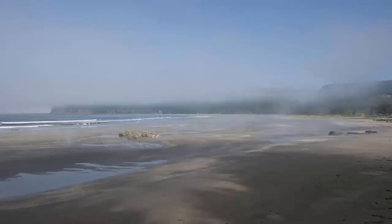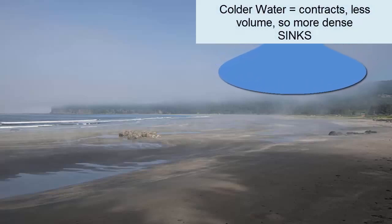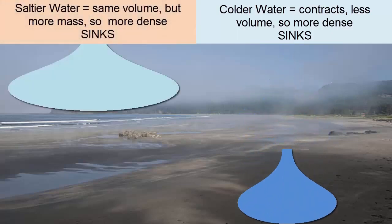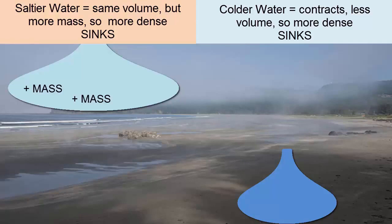Where do we see objects rising and sinking on our planet as density changes? In the oceans, when water cools, it contracts, becomes smaller in volume, and thus denser, and sinks. If water becomes saltier, it adds mass without changing its volume. It becomes denser and sinks.